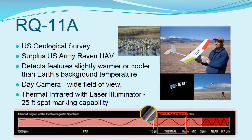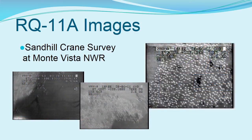Sandhill cranes at Monte Vista National Wildlife Refuge were imaged using an RQ11A unmanned aerial vehicle-mounted thermal infrared video sensor. This sensor operates in the longer thermal infrared wavelengths since the temperatures of living creatures are relatively cool. The cranes show up well against the background temperatures of their roosting sites, and imaging takes place at a time when the temperatures of the cranes will be different from that of their background.